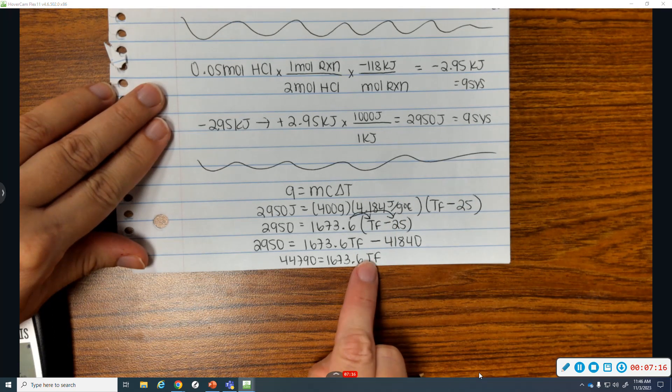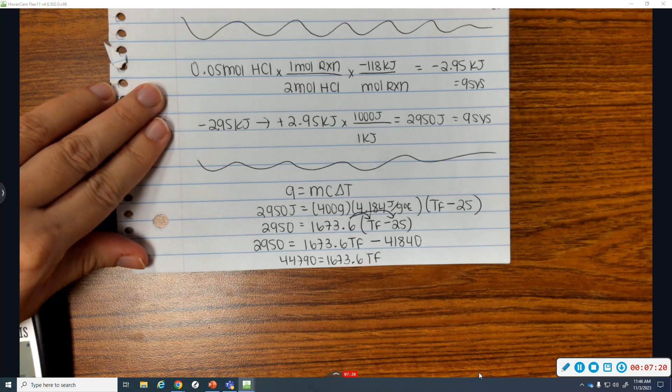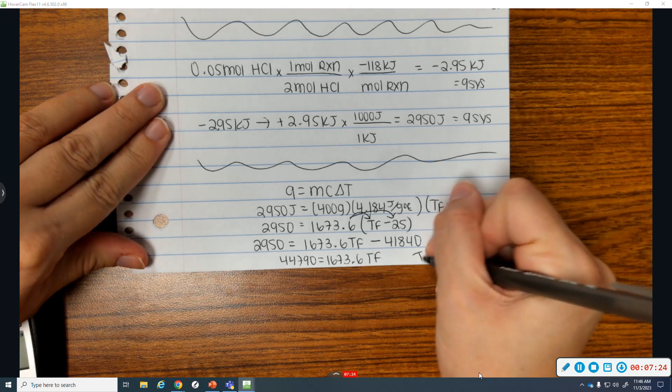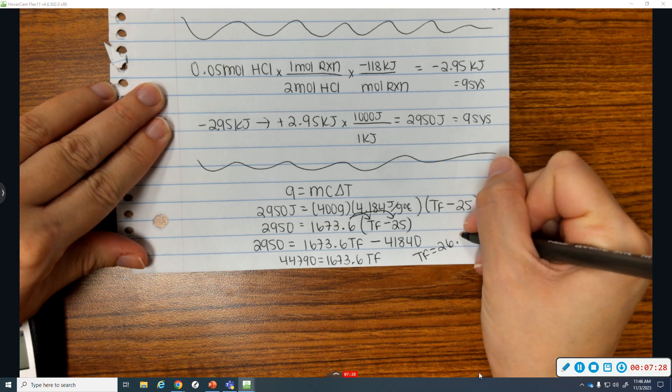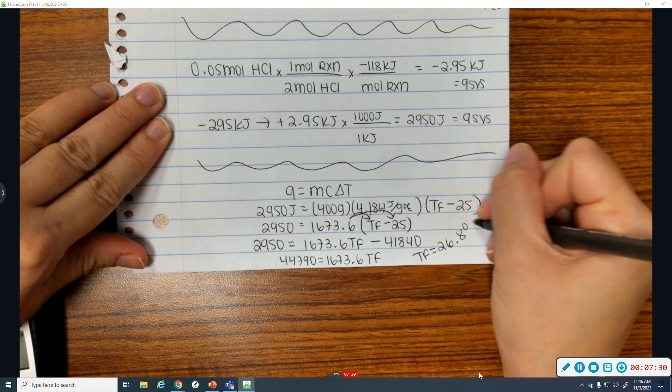Divide both sides by 1673.6. We get the final temperature is 26.8 degrees Celsius.